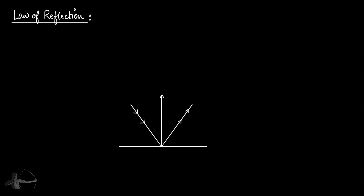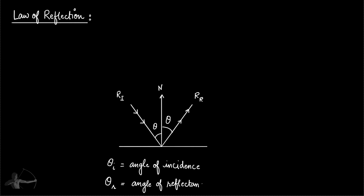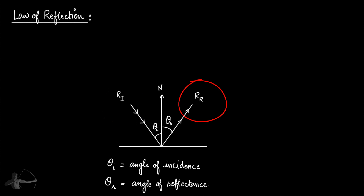Because the surface exhibits a property of reflection, this ray will be reflected as well. This is the reflected ray. The law of reflection tells us that the angle of incidence — the angle between the normal and the ray of incidence — equals the angle of reflectance, which is the angle between the normal and the reflected ray. So theta_i equals theta_r.